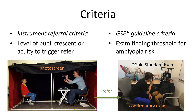Remember about criteria: the instrument referral criteria are those things in your objective screener or photo screener - the level of acuity screening or the level of the pupil crescent that triggers a referral. The gold standard follow-up examination criteria is the threshold considered an amblyopia risk factor or true confirmatory finding. Remember to keep separate the instrument referral criteria from the gold standard examination criteria, even though they may have the exact same units - for example, diopters of hyperopia for both.